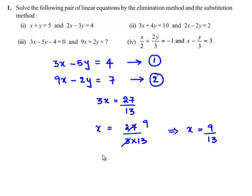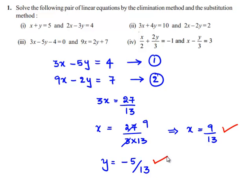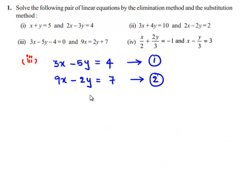We have found the value of y to be minus 5 by 13. Therefore, the solution for the pair of linear equations is x equals 9 by 13 and y equals minus 5 by 13. Now let us solve the given pair of linear equations by the substitution method.